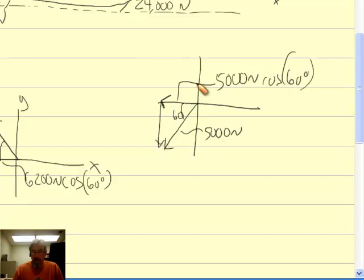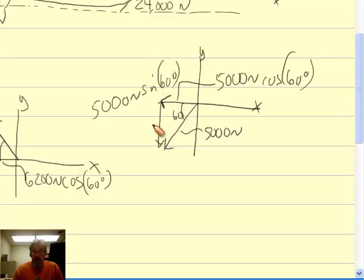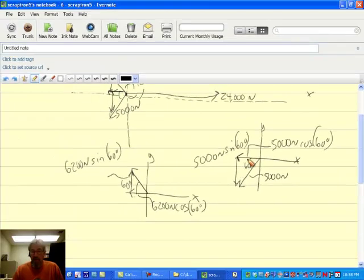And this component, the one that's on the y-axis, well, that's going to be 5,000 newtons times the sine of 60 degrees, because it's opposite the 60-degree angle. Opposite sine, adjacent is cosine.